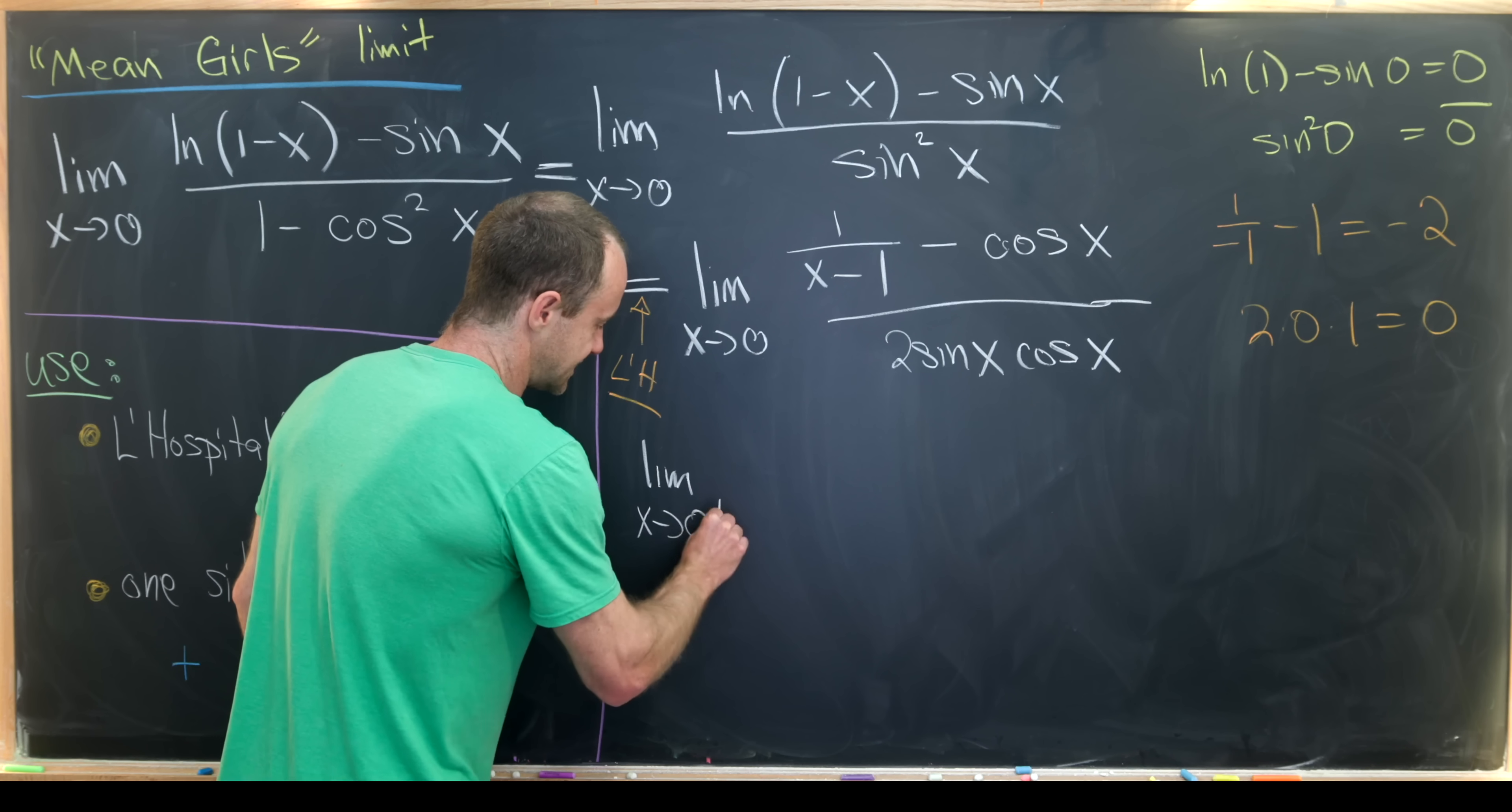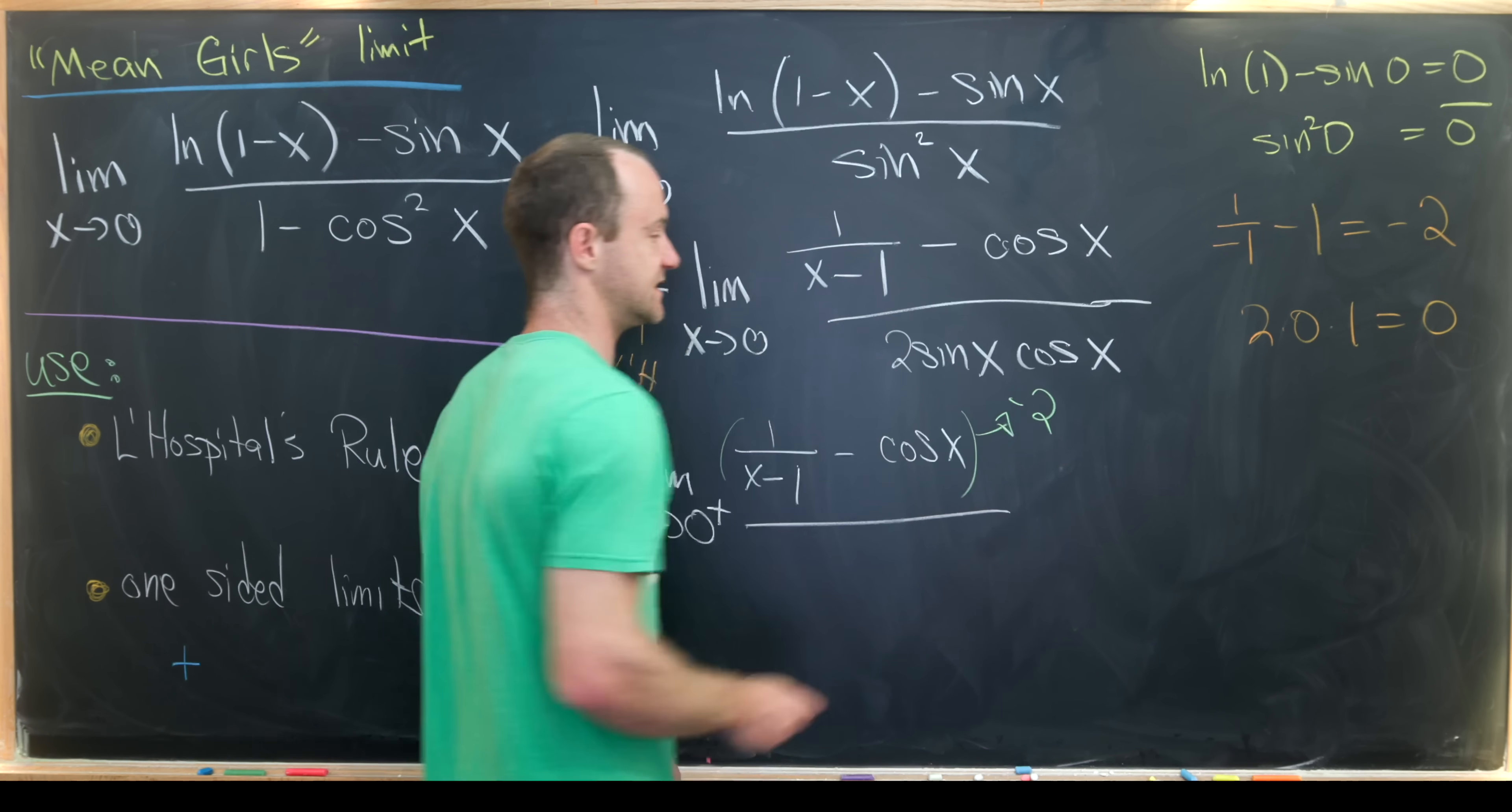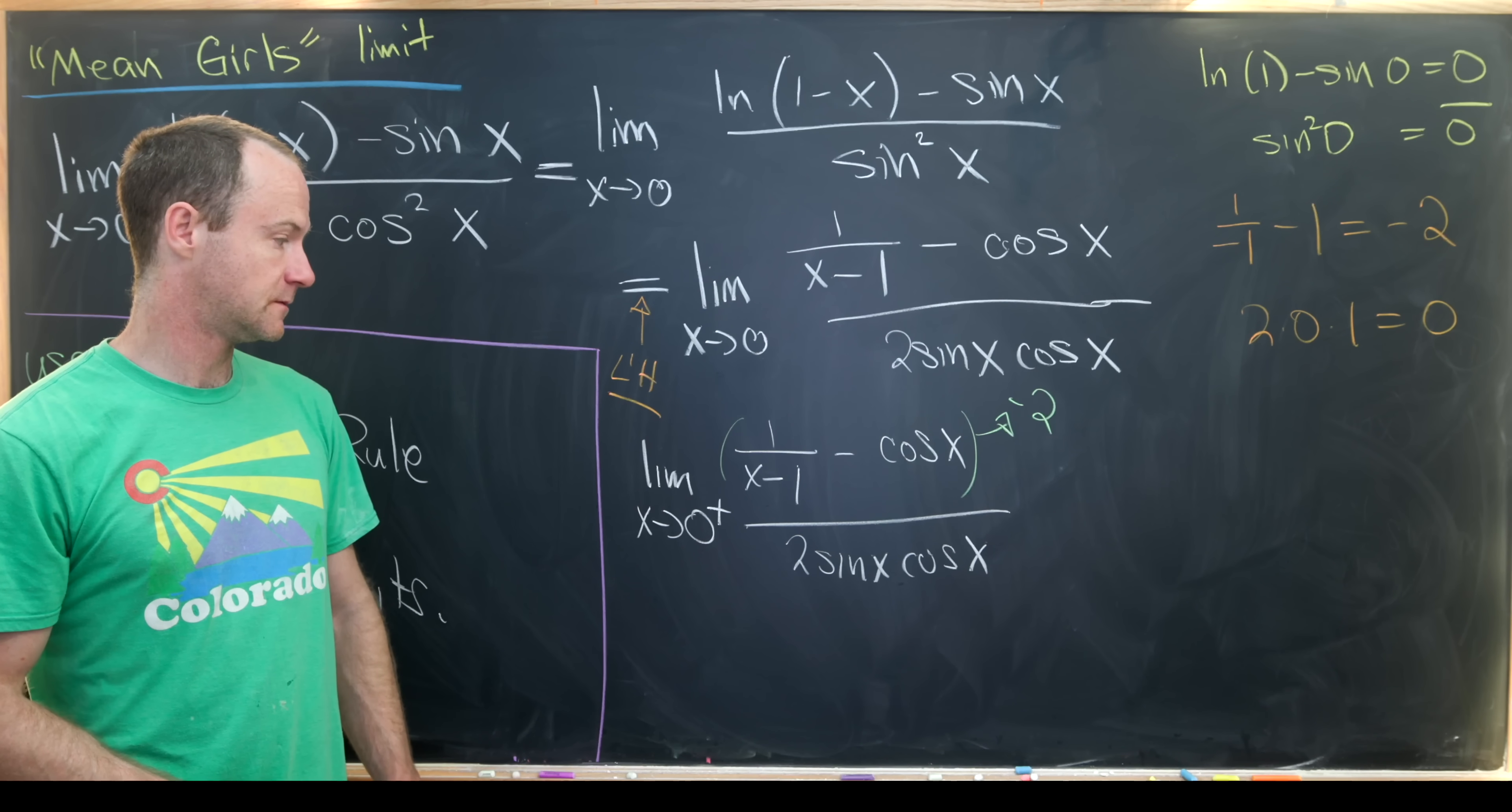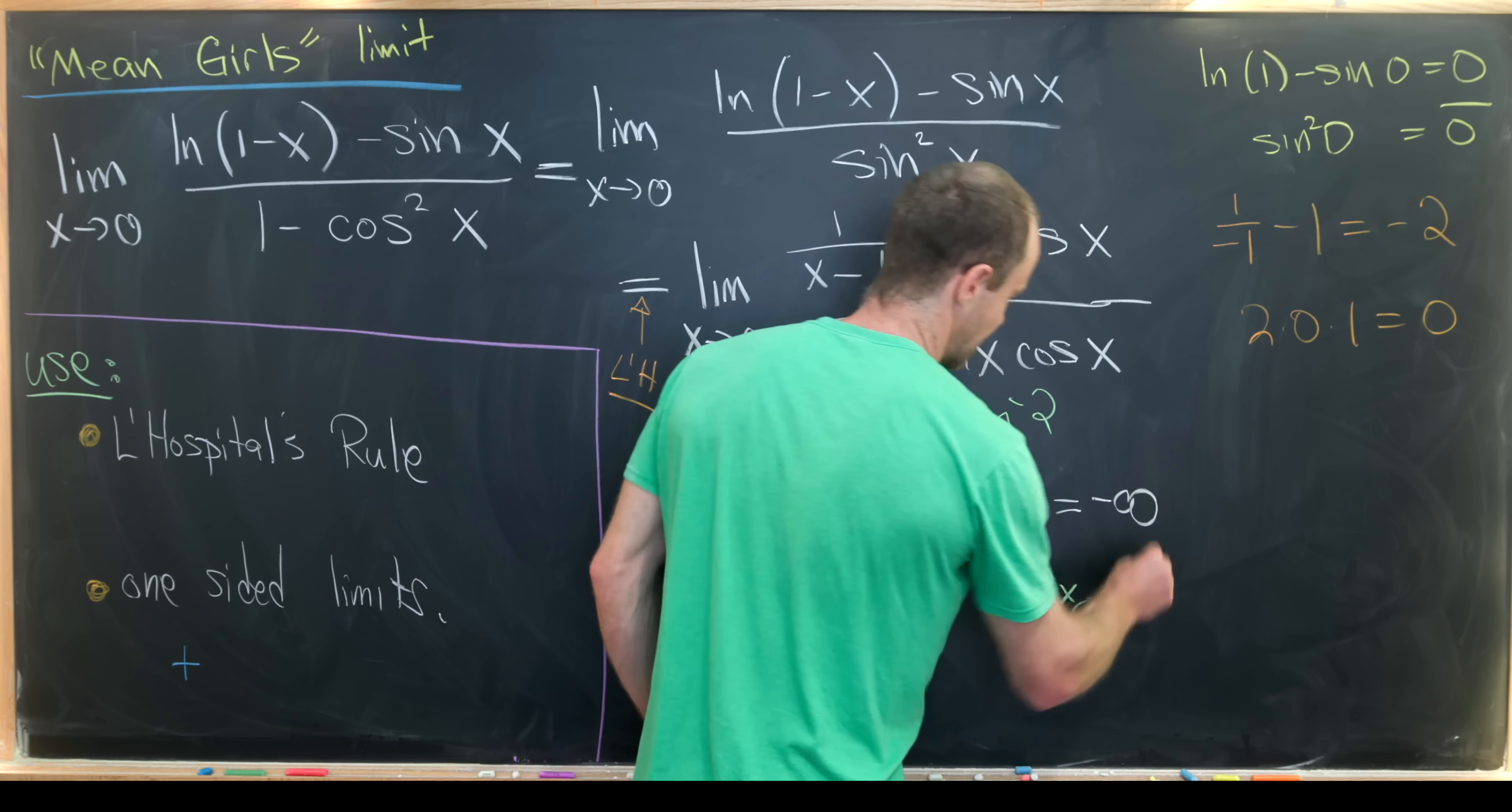So let's take the limit as x goes to 0 from above of 1 over x minus 1 minus the cosine of x. Since the limit of the numerator is not equal to 0, it's equal to negative 2, even if we go to x from above, since this is continuous at 0, this is going to trend off towards negative 2. Then this 2 sine of x cosine of x, as x goes to 0 from above, cosine is essentially equal to 1 because cosine of 0 is 1, and then sine is approaching 0. But it's approaching 0 from above because sine of positive numbers, a little bit bigger than 0, are positive. So since this goes to negative 2 over plus 0, that gives us motivation for this one-sided limit to be negative infinity.